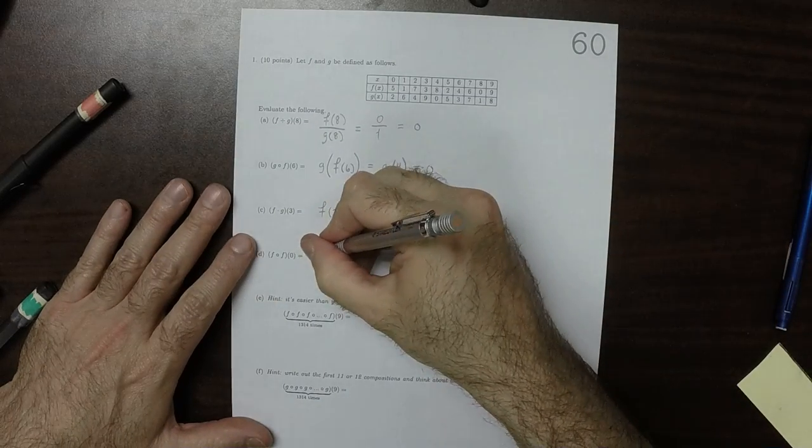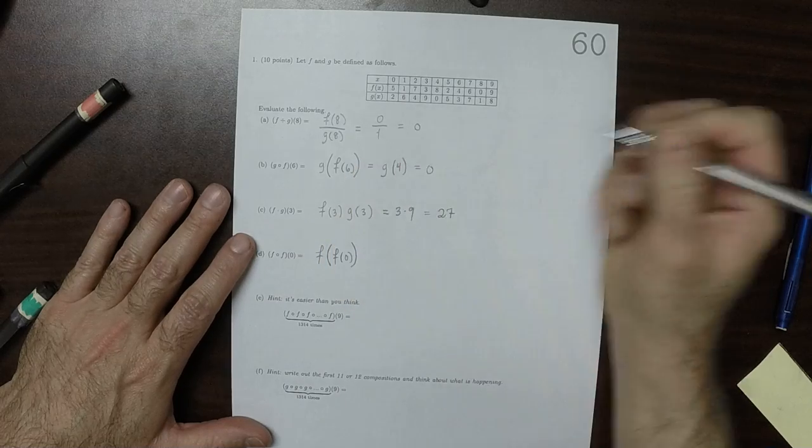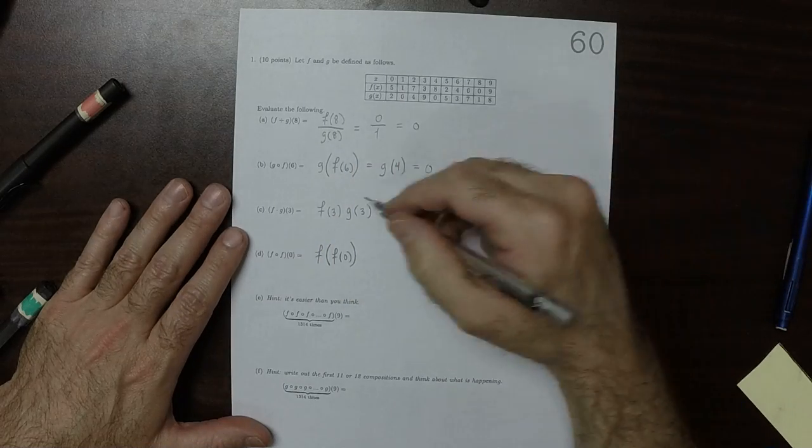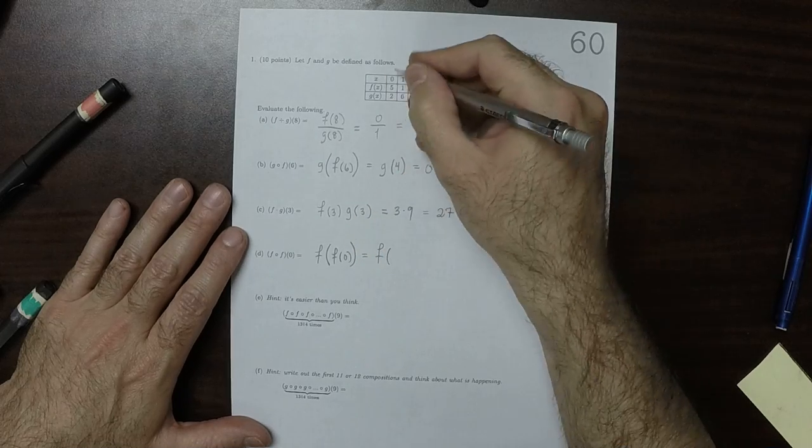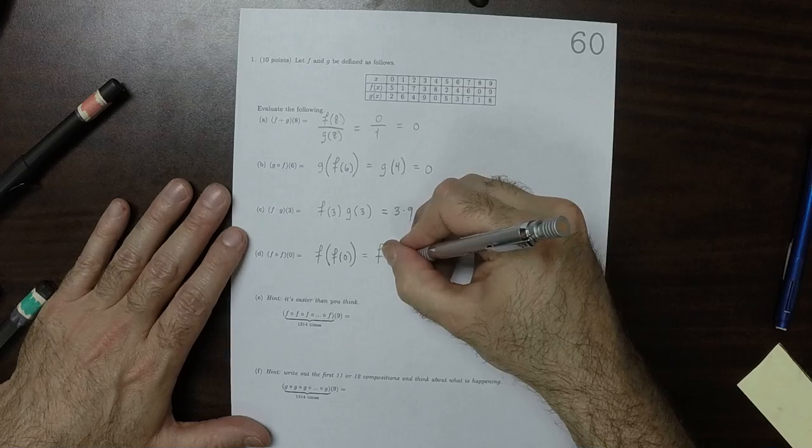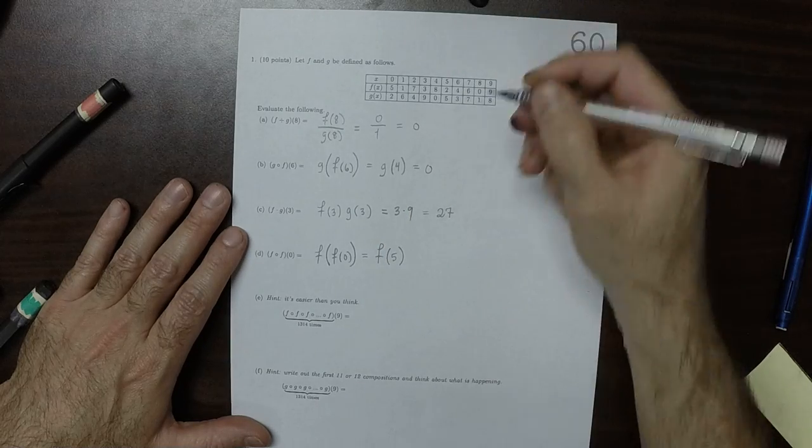This is f evaluated at f of 0. Well, f of 0, that's 5, and then f of 5, that's 2.